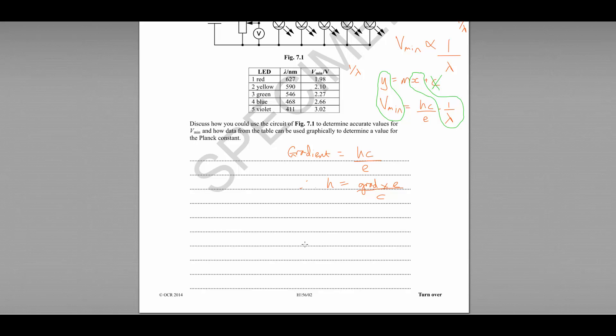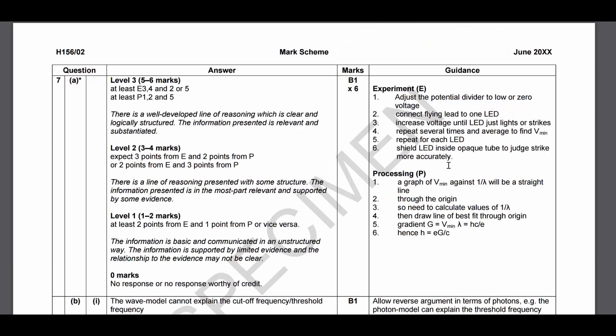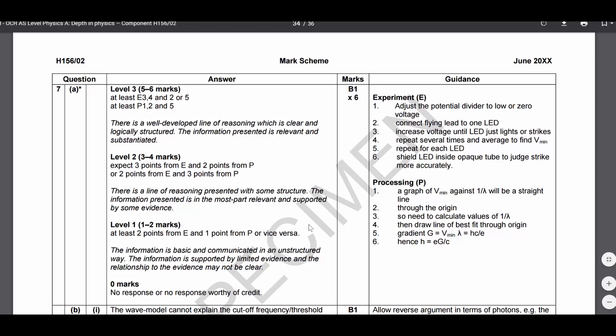That will give us our Planck constant. So if we return back to the mark scheme, you'll see that's what it says. So we plot a graph of Vmin against 1 over lambda. That will be a straight line through the origin. So we can calculate the values of 1 over lambda in our results table, draw a line of best fit, and the gradient is going to allow us to calculate h as e multiplied by the gradient divided by c.